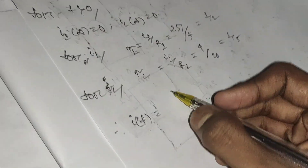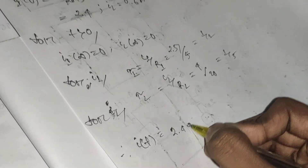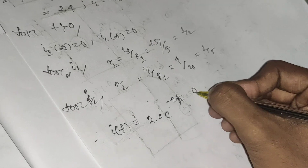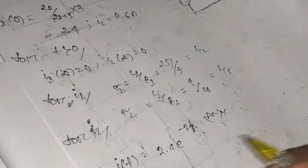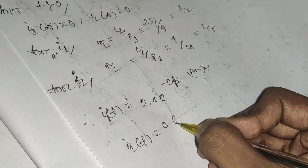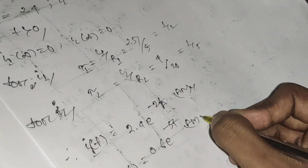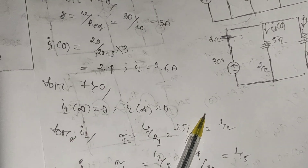Using the general formula i(t) = i(∞) + [i(0) − i(∞)] × e^(−t/τ): since i(∞) = 0, i1(t) = 2.4 e^(−t/(1/2)) = 2.4 e^(−2t) amperes. For i2(t): i2(t) = 0.6 e^(−t/(1/5)) = 0.6 e^(−5t) amperes. These are the answers for problem 7.57. I hope you enjoyed the video, thank you.